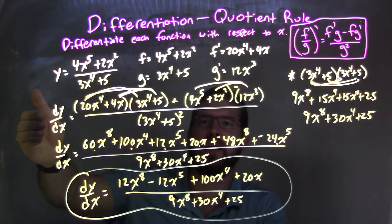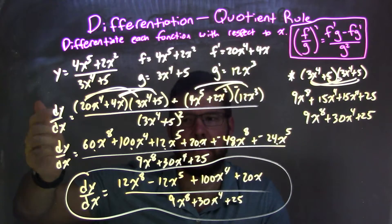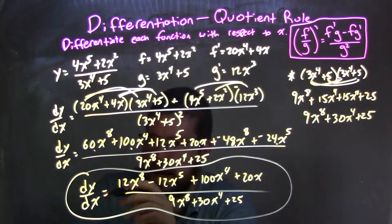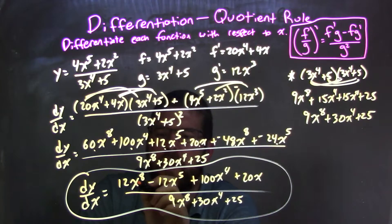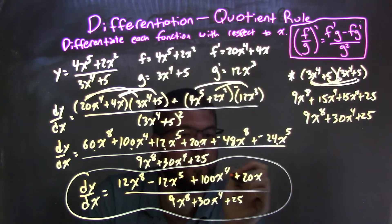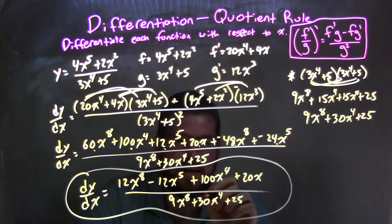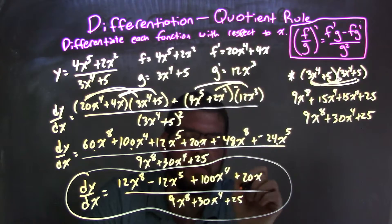At that point, I have my calculus done. I've taken my derivative. The rest is just algebra and simplification. When I did my algebra and simplification, I got to my final answer, which was dy dx is equal to 12x to the eighth minus 12x to the fifth plus 100x to the fourth plus 20x all over 9x to the eighth plus 30x to the fourth plus 25.